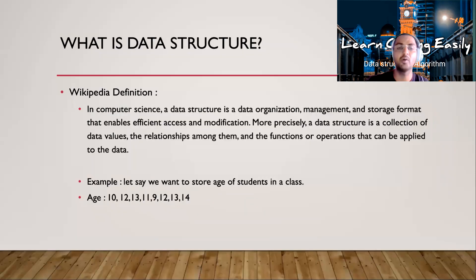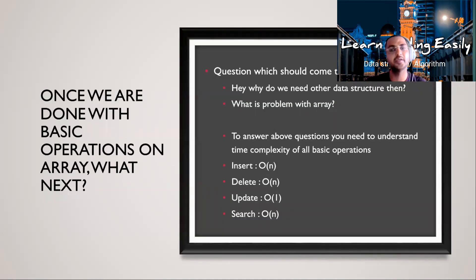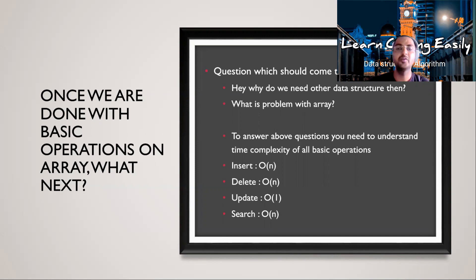For update in an array, it is very cheap — it takes constant time O(1). For example, to update the age of the second student, you simply do array[1] = new value, which is constant time. For search in an array, you need to traverse the full array, so it takes O(n) time. Once you are clear on these four operations, you need to write code and understand how insert, delete, update, and search work and how much time they take. This is the basic prerequisite to master data structures.